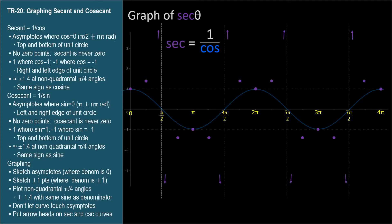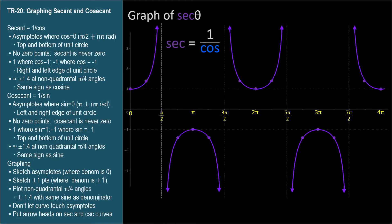And the secant function ends up looking like this. The relationship with cosine is evident. It touches cosine where it's 1 and negative 1, then arcs away in either direction as cosine approaches 0. At angles where the cosine is 0, the secant is undefined.